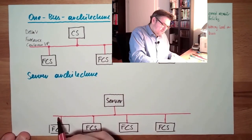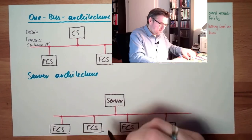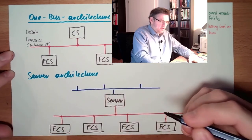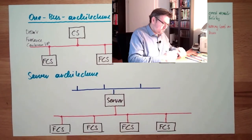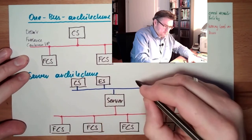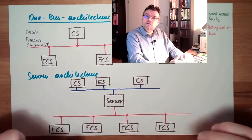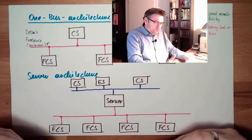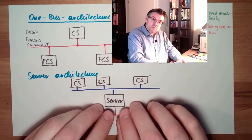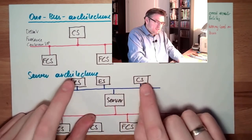There's the server, and on the other side of the server there is a different bus system. At this different bus system are located the control stations, the engineering stations, and so on. You see there are simply two bus systems which are interconnected by a server. The server's task is to get all the information from the field control stations, summarize them into one database, and this database is displayed by the control stations.